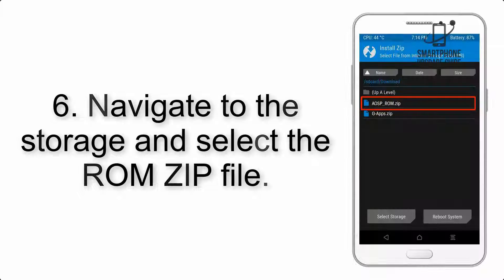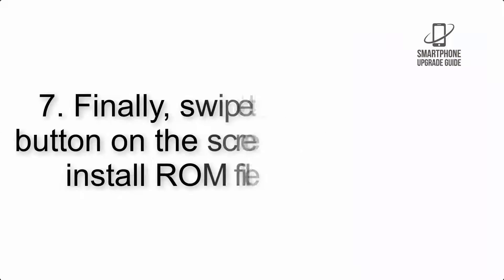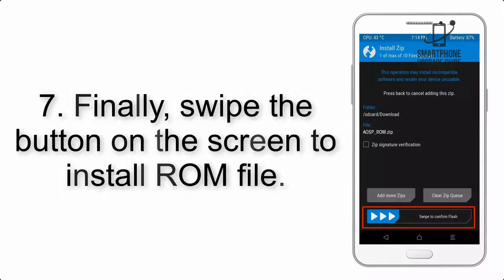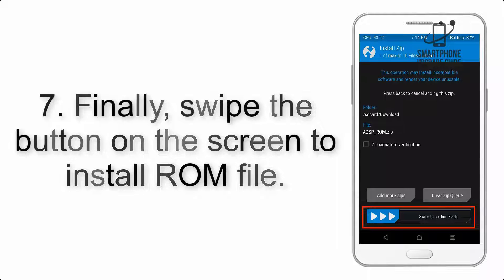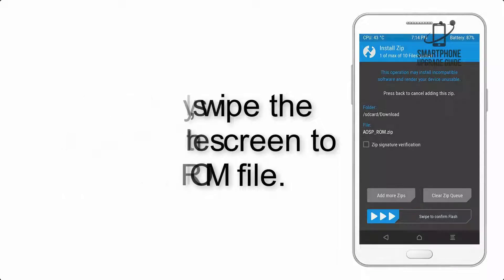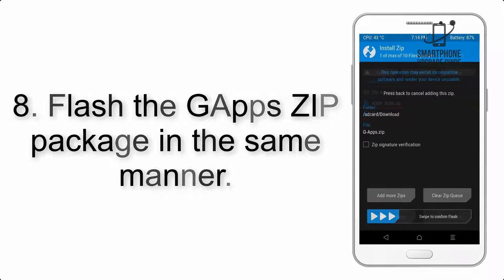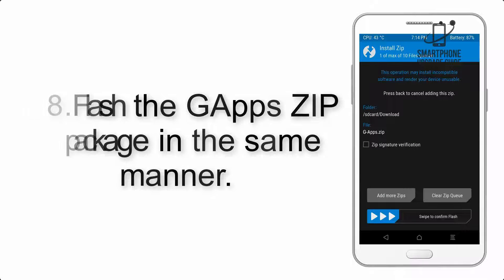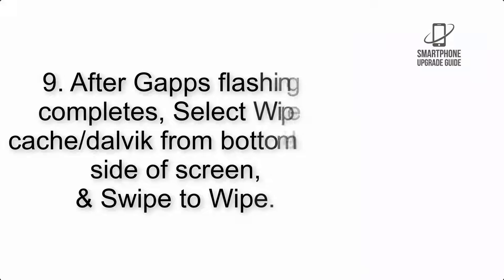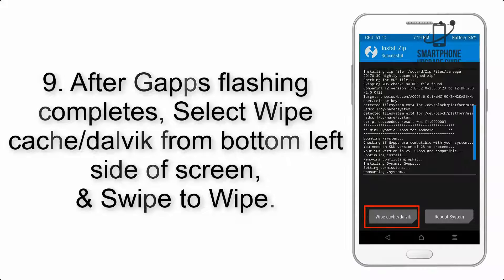Step 5: Go back to the recovery main screen and tap on the Install button. Step 6: Navigate to the storage and select the ROM zip file. Step 7: Swipe the button on the screen to install the ROM file. Step 8: Flash the GApps zip package in the same manner.